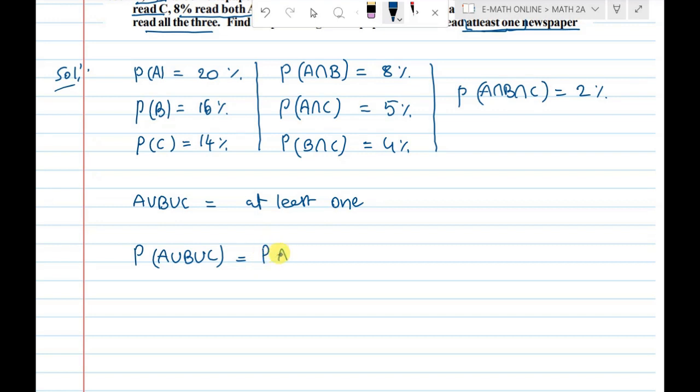So, P of A plus P of B plus P of C minus P of A intersection B minus P of B intersection C minus P of C intersection A plus P of A intersection B intersection C.